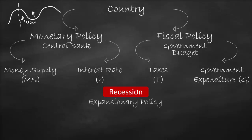For expansionary monetary policy: people lose their jobs, people don't have money, companies are downsizing, they have less profit or make a loss, we have less liquidity. Therefore, we need to increase money supply and/or decrease interest rate. For expansionary fiscal policy, we need to increase government spending — give subsidies, build infrastructure — and decrease taxes.